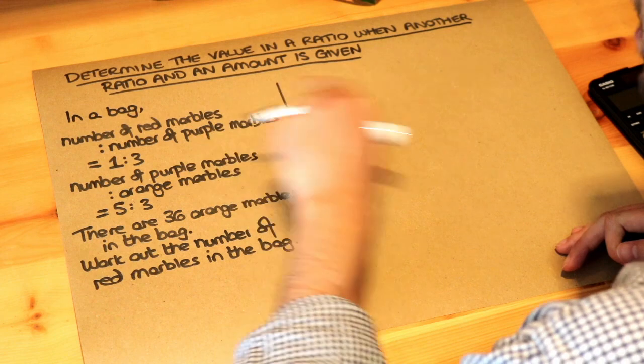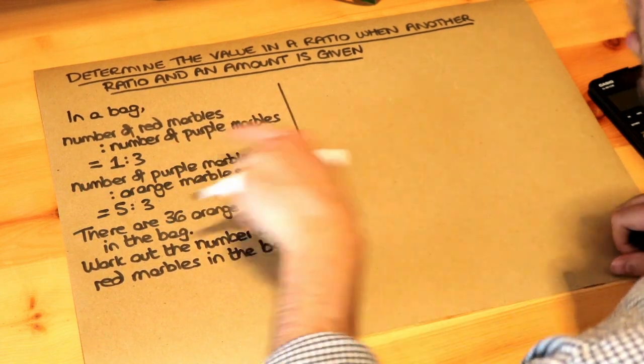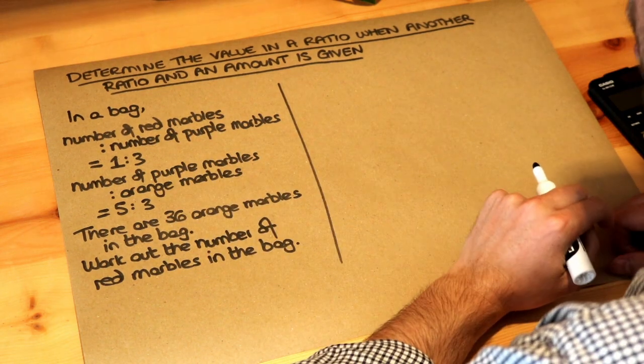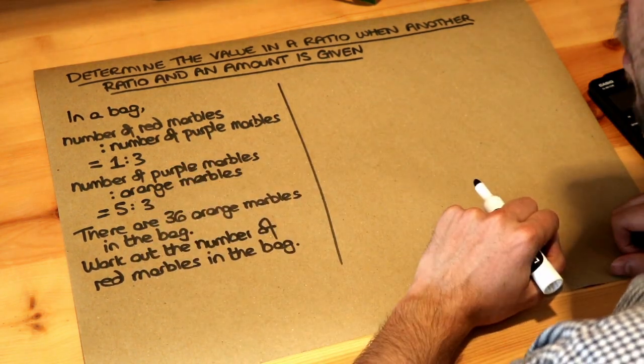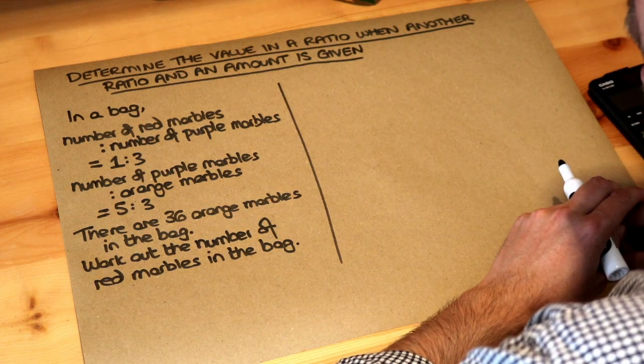In a bag the ratio of the number of red marbles to the number of purple marbles is one to three and the ratio of the number of purple marbles to orange marbles is five to three. There are 36 orange marbles in the bag. Work out the number of red marbles in the bag.